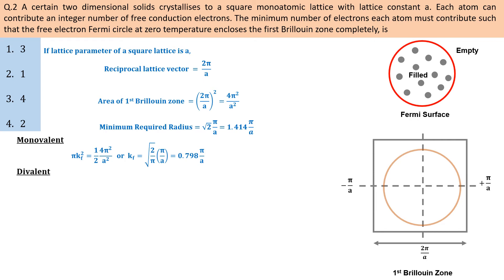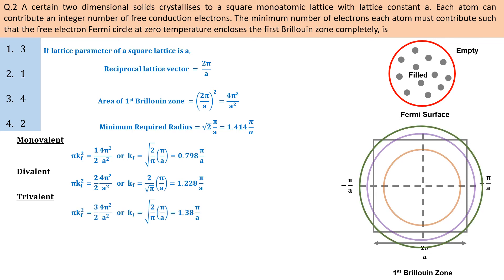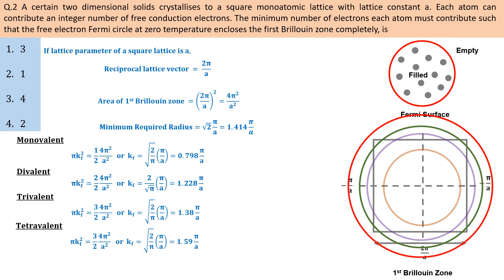If the atom is divalent, the Fermi circle area equals that of the first Brillouin zone, but the circle still does not enclose the zone because it cuts the corners at the zone boundaries. If the atom is trivalent, the circle still does not enclose the zone. But if the atom is tetravalent, the Fermi circle fully encloses the first Brillouin zone. Because each atom contributes 4 electrons, option 3 is correct — the answer is 4.